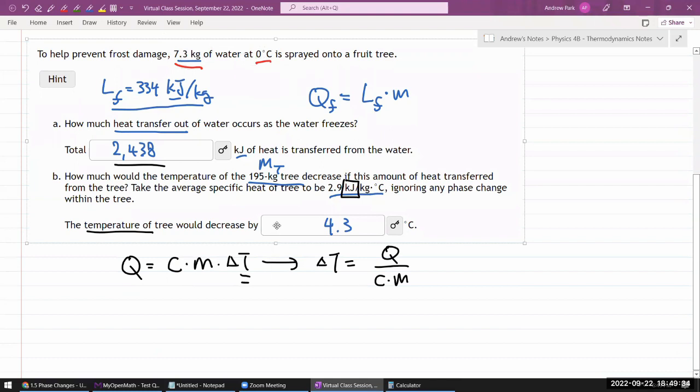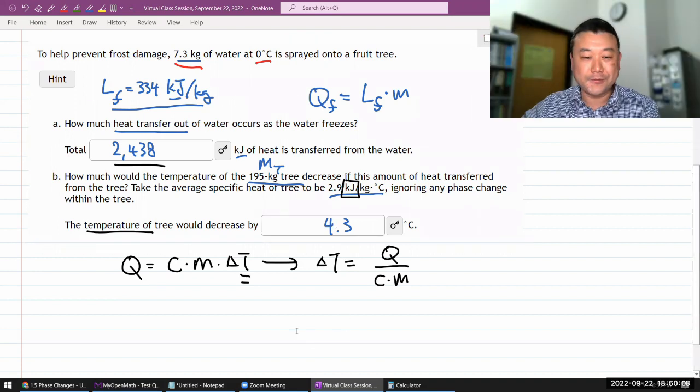That took out, that provided enough heat as it froze to keep a tree that's many times its size, a little less than 30 times its mass from freezing by like 4.3 degrees. You can see how, if you're anticipating greater drop in temperature, you spray more water. And it'll help prevent the tree from freezing to the point where it takes frost damage.